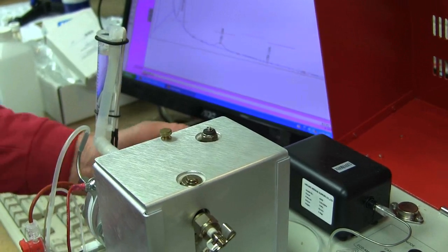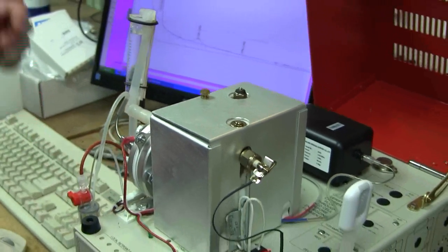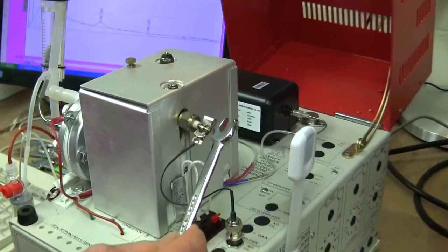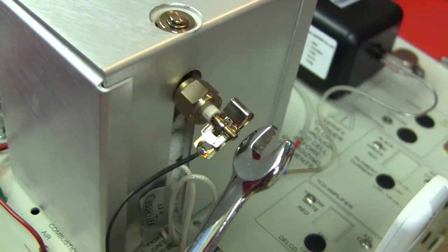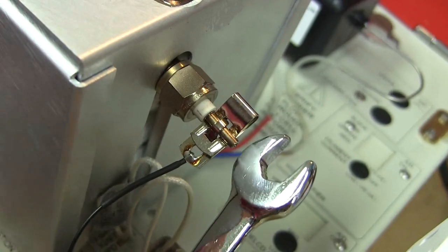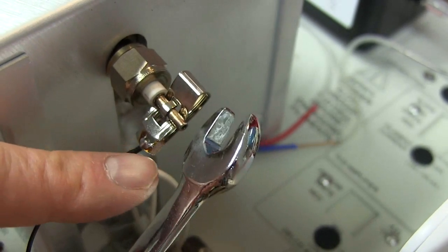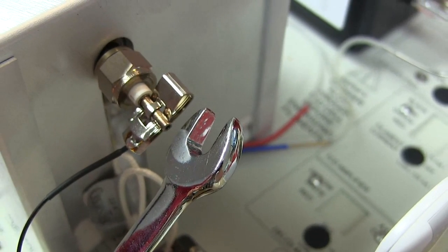And you'll know that it's working because when you turn on the GC, if you've done it correctly, then the flame will light. If you haven't done it correctly, then the flame won't light. So you can see the condensation from the flame is appearing on my shiny wrench, so that means I've got it tight enough.